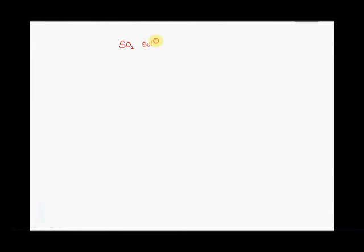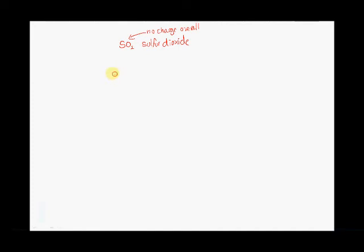Now we look at sulfur dioxide, SO₂. Again, it is a neutral molecule with no overall charge. We put the atoms in a column: S and two O's. The rule gives negative two for each oxygen, and the overall charge is zero because it's a neutral molecule. So we have −2 for each oxygen, and it must add up to zero. Therefore, our sulfur must be plus four — the oxidation number of sulfur is plus four, and oxygen is negative two.